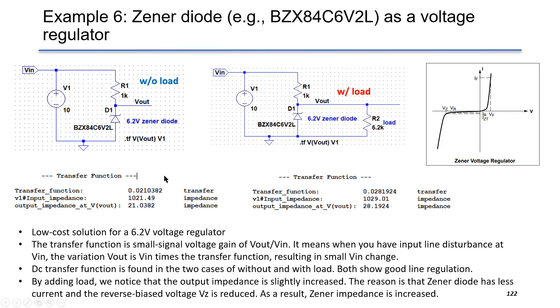In the final example, we want to evaluate the Zener diode as a voltage regulator by using the transfer function. Here we have V1 as the input voltage and Vout as the output voltage. We have a series resistor R1 as 1 kilo ohm and the same Zener diode as before to regulate the output voltage around 6.2 volt.